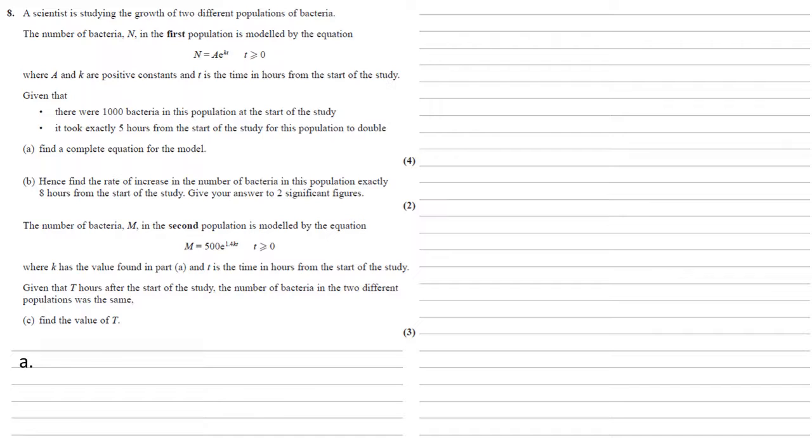So we're told that n is equal to a e to the kt. We know that at the start of the study, when t is equal to zero, there were 1000 bacteria. So let's put these into our equation. We get 1000 equals a e to the zero. E to the zero is one, so a must equal 1000.